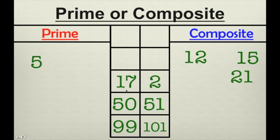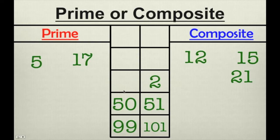How about 17? 17 is a prime number. It's prime because it can only be divided by 1 and itself. It only has factors of 1 and 17. Therefore, it's prime.